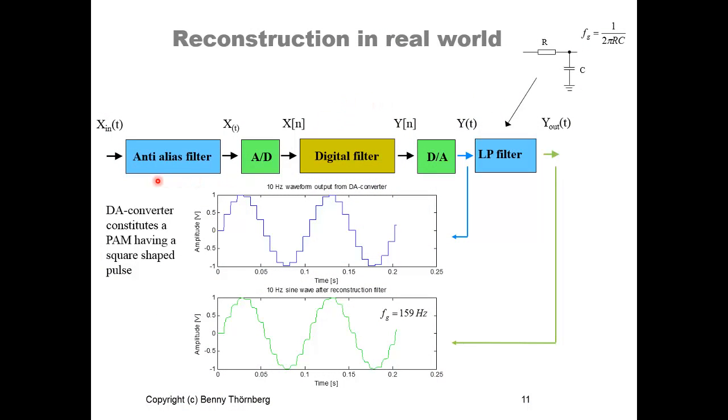I will now show a MATLAB simulation of the reconstruction process, demonstrating how the actual output signal changes as we vary the cutoff frequency of a low-pass filter used for reconstruction. The low-pass filter is a first-order resistor-capacitor (RC) filter — the simplest possible. In the signal flow, we have an anti-aliasing filter, an A-to-D converter, digital signal processing, a D-to-A converter, and the first-order RC low-pass filter. We observe the signal directly out of the D-to-A converter and after the low-pass filter.